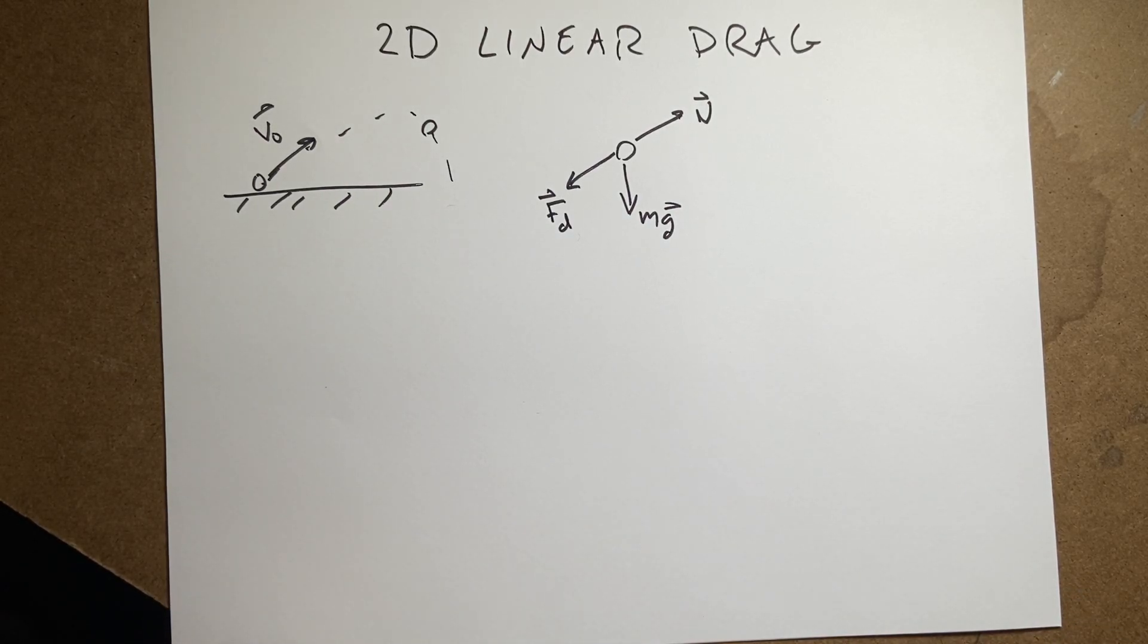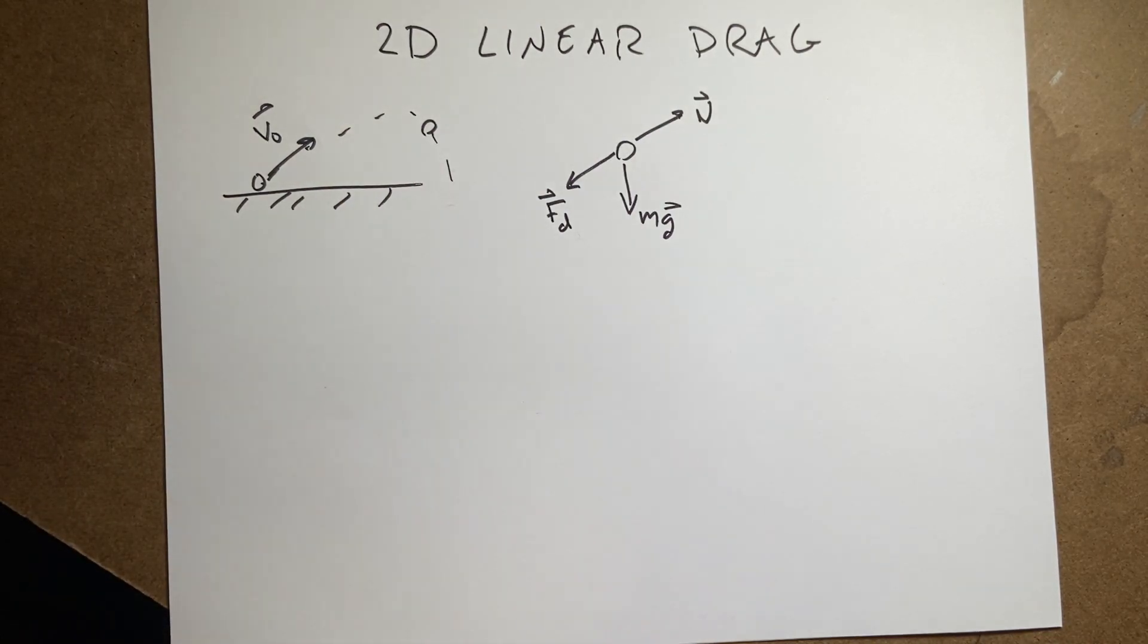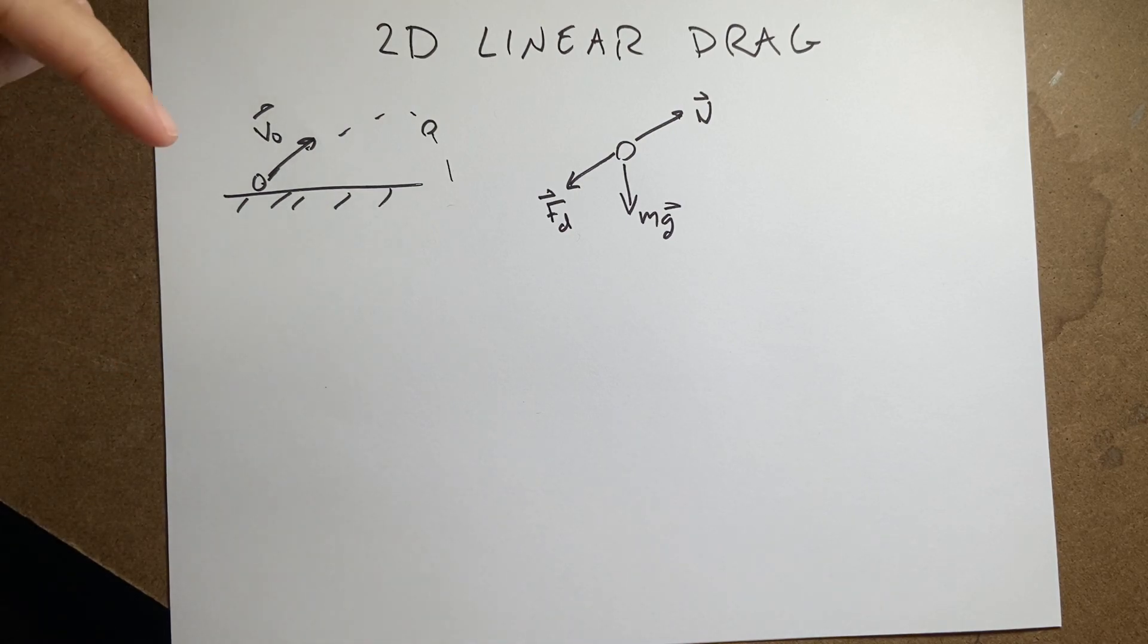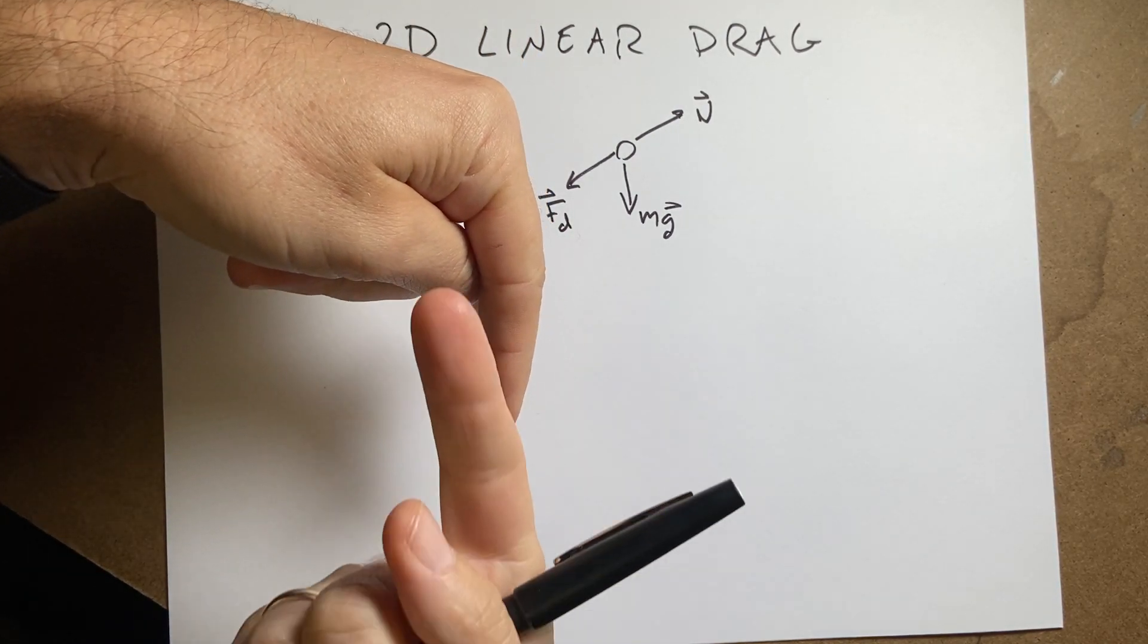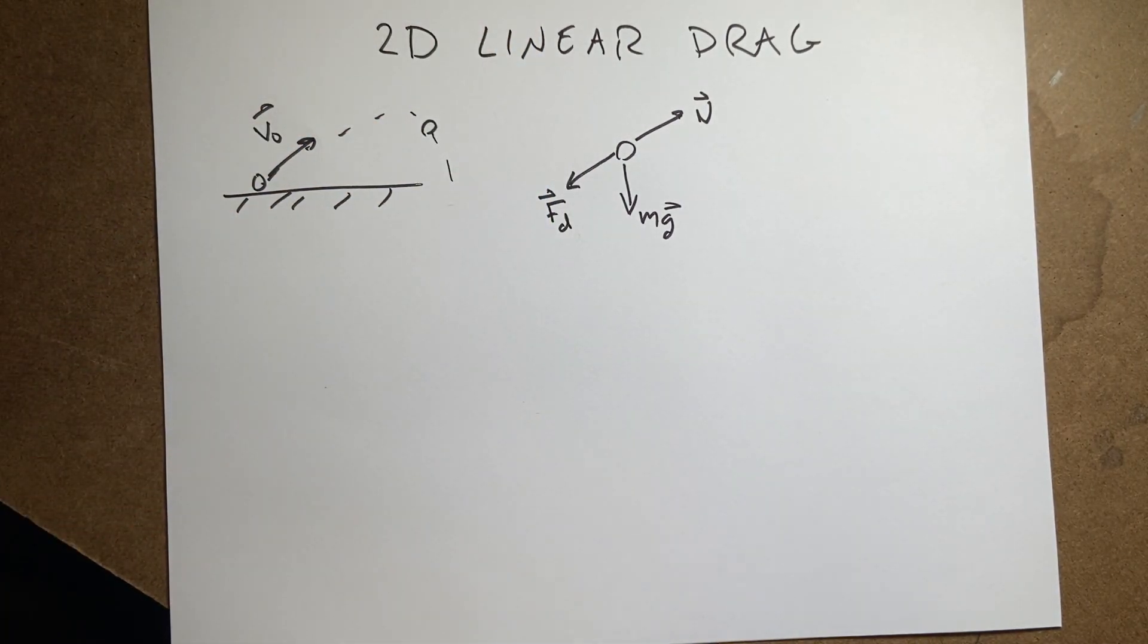Okay, so we started off and I did one dimensional motion with no gravity and linear drag. So it's moving along this way and there's a drag force pushing back and that was the only force. And then I did a falling object with the upward drag force and we did that.